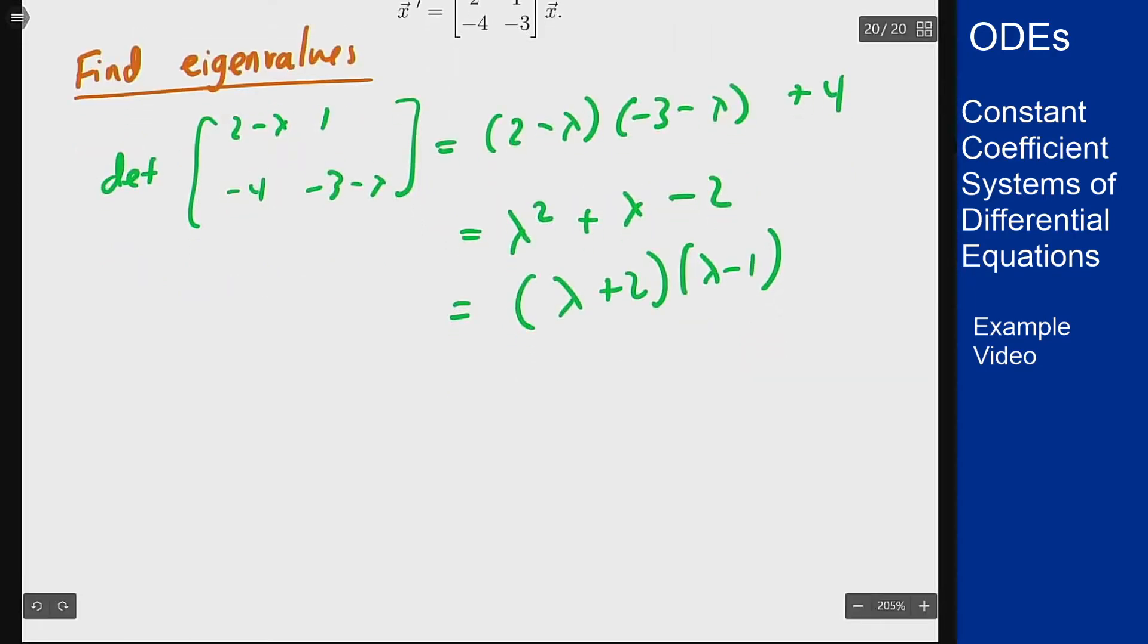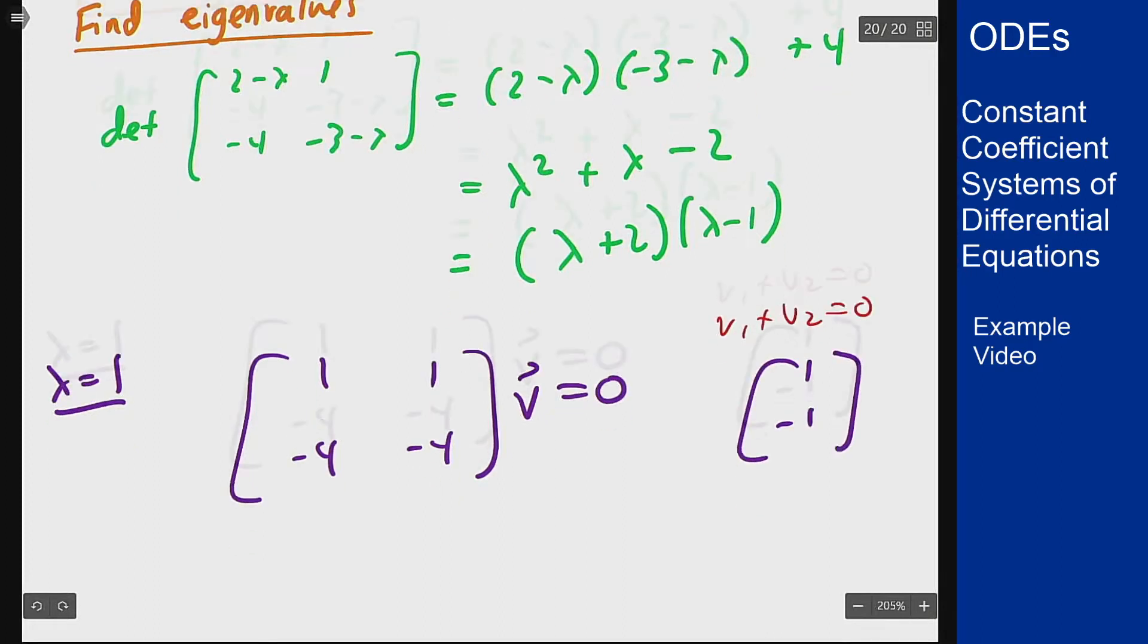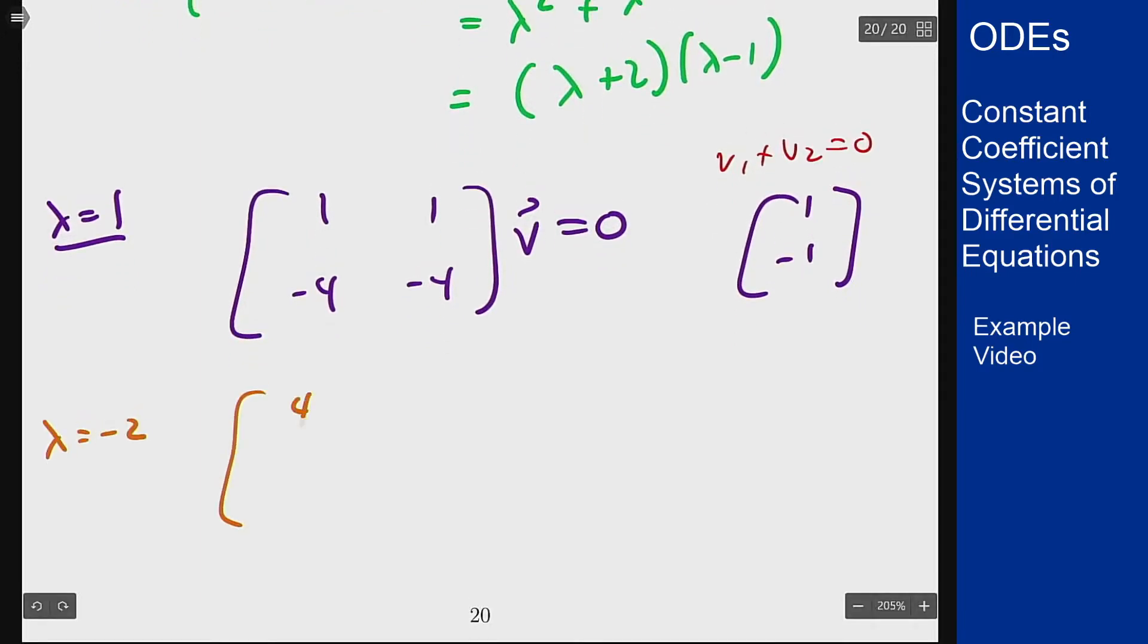For the first eigenvalue at λ=1, the matrix becomes (1, 1; -4, -4)v = 0, which tells us that v₁ + v₂ = 0, so a potential eigenvector is (1, -1). For λ = -2 we get (4, 1; -4, -1)v = 0, telling us that 4v₁ + v₂ = 0, where the potential eigenvector is (1, -4).